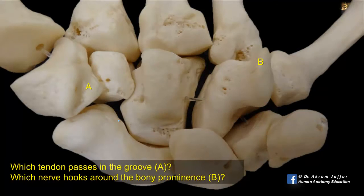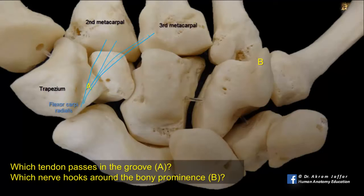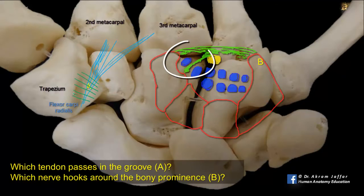Which tendon passes in the groove A? A is a groove in the trapezium where the tendon of flexor carpi radialis passes to be attached to the bases of the second and third metacarpal bones. Flexor carpi radialis, like other long flexor tendons, passes under the flexor retinaculum. But here, the flexor retinaculum sends a deep partition that converts this groove into a separate tunnel for the flexor carpi radialis muscle.